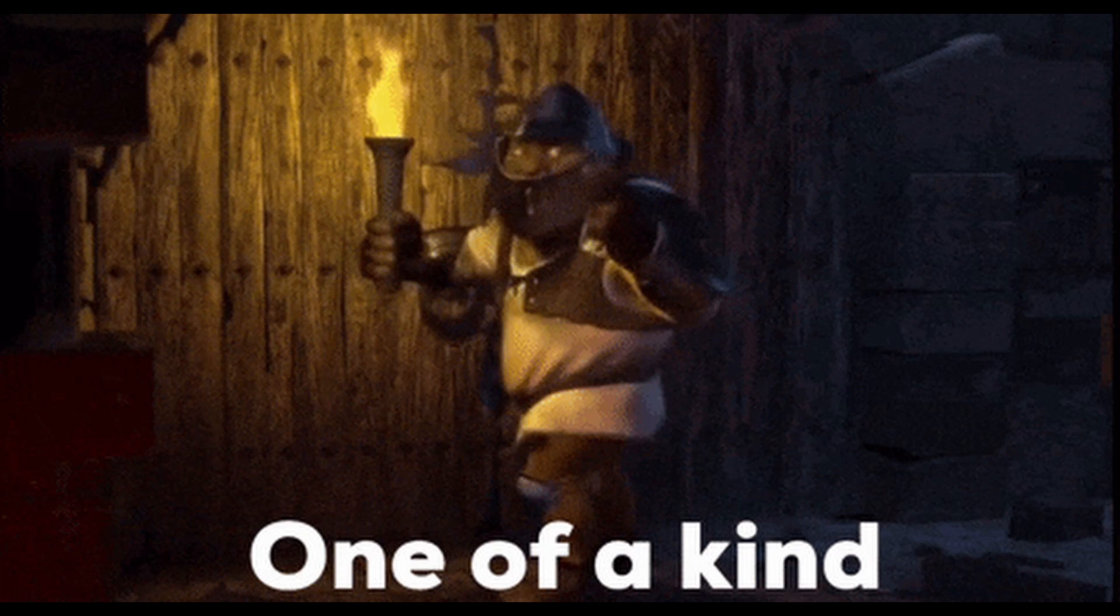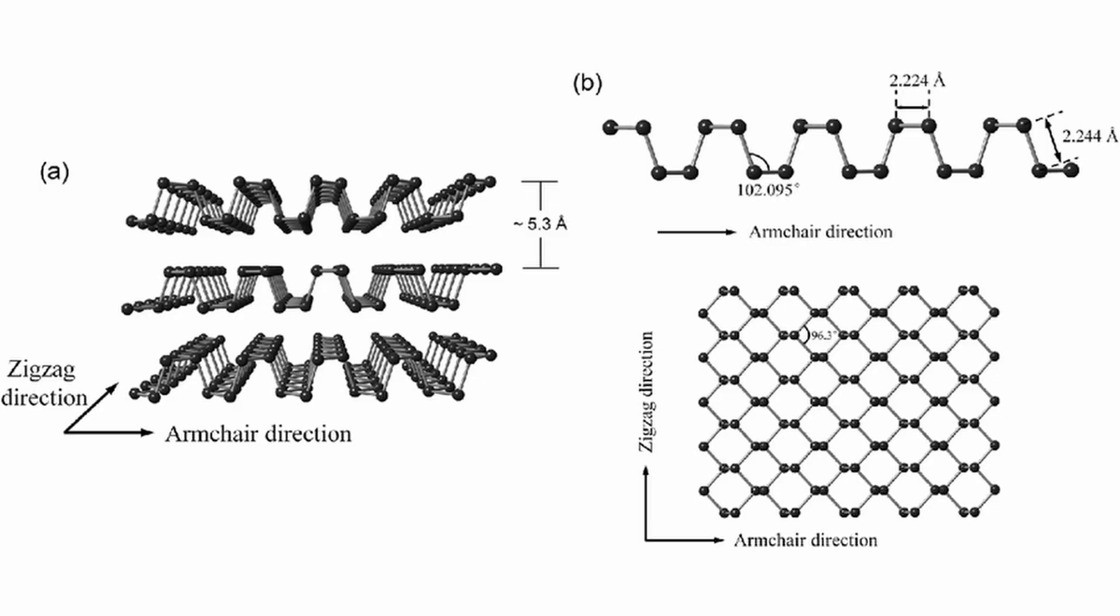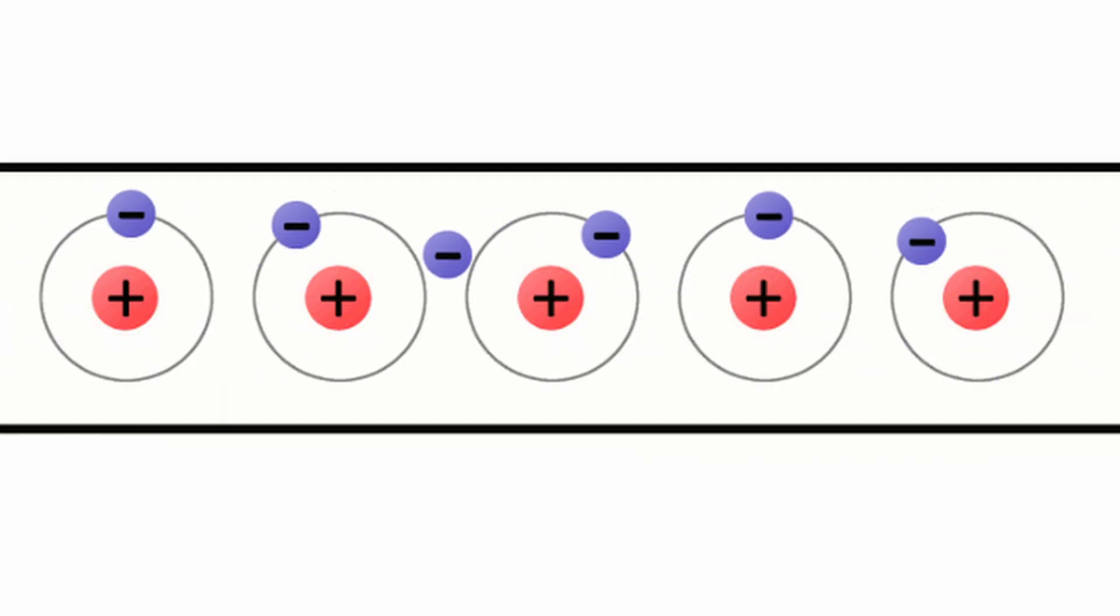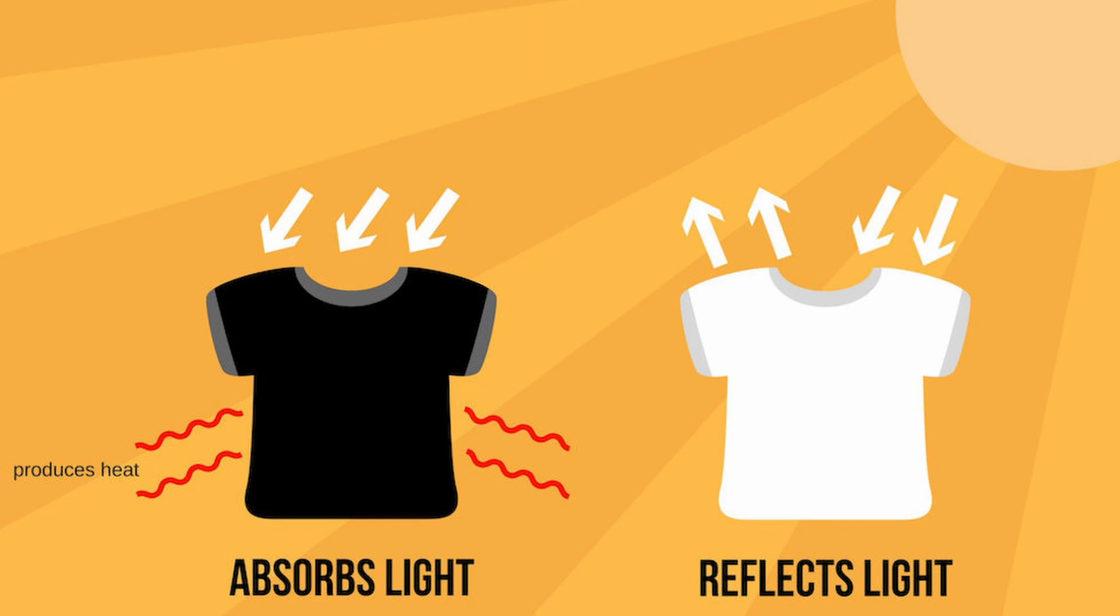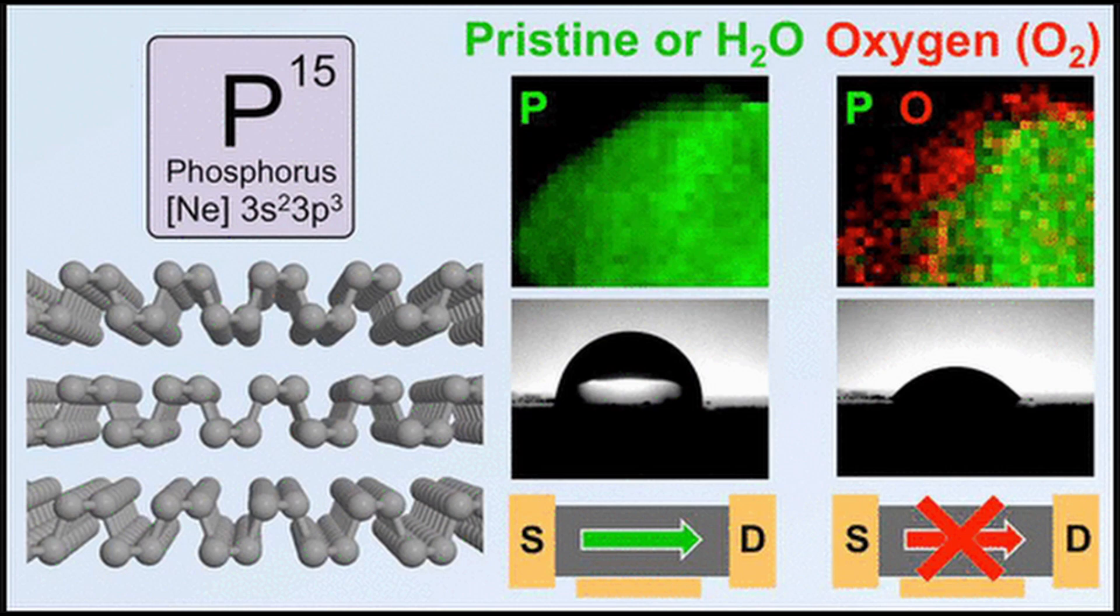Black phosphorus is special because it has layers that can be adjusted for different uses, it can carry electric charges quickly, and it even absorbs light well. Black phosphorus is also able to bend without breaking and it reacts to air and moisture.